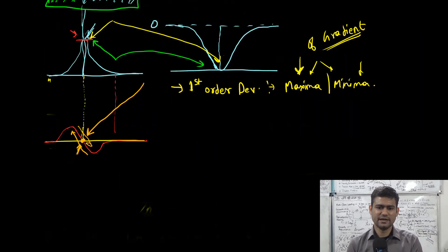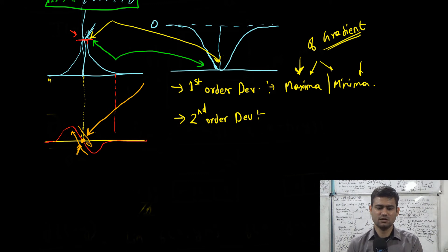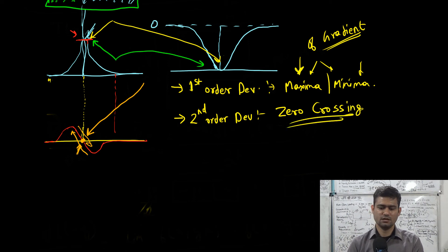The second-order derivative based methods identify the zero crossing of the Laplacian or the second-order derivative, and usually this point of zero crossing provides the midpoint of an edge.